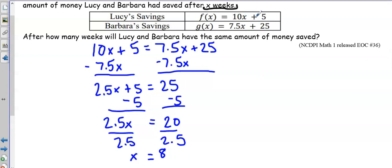I can check my answer by substituting it back into the problem. So if I substitute 8 here, I have 10 times 8 to give me 80 plus 5 is 85. When I substitute in 8 for X here, I have 7.5 times 8 would give me 60. 60 plus 25 is also 85. So I know that this is the right answer.